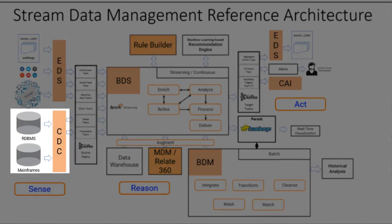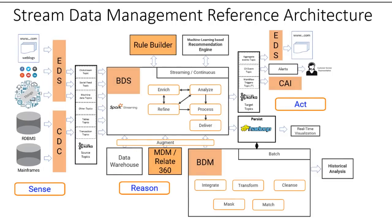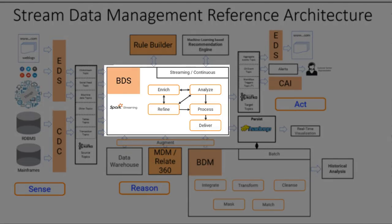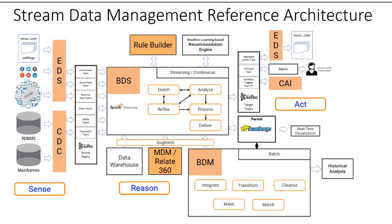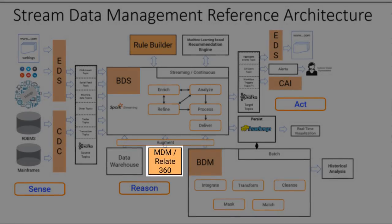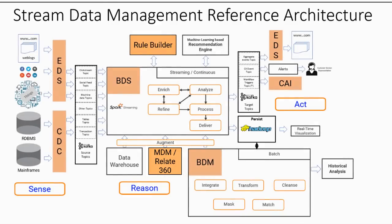Power Exchange CDC publisher publishes the CDC data from traditional relational systems onto Kafka. Once the data is in Kafka, Big Data Streaming enriches and processes the streaming data in flight with various transformations. The streaming data works with customer data in Informatica MDM and the Relate 360 solution to enrich the data with customer details so that targeted advertisements are triggered.